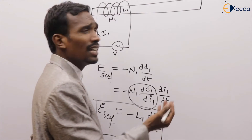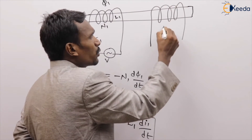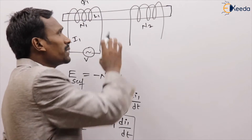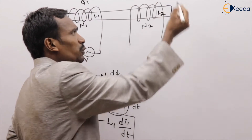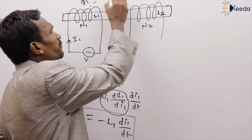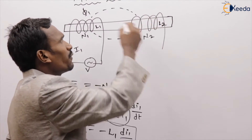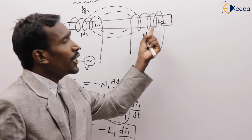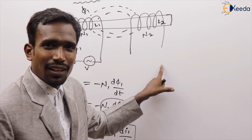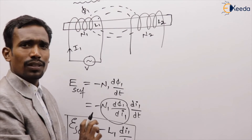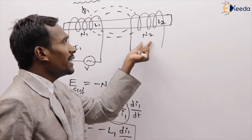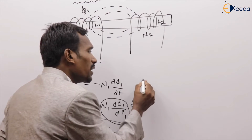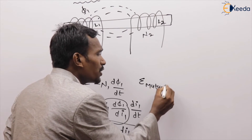Now I am going to take another coil with N2 number of turns, just adjacent to this coil, with self-inductance L2. When flux phi1 cuts with N2 number of turns, then EMF induces in this other coil. That EMF is called mutual induced EMF, because it is induced due to the flux linking of phi1.